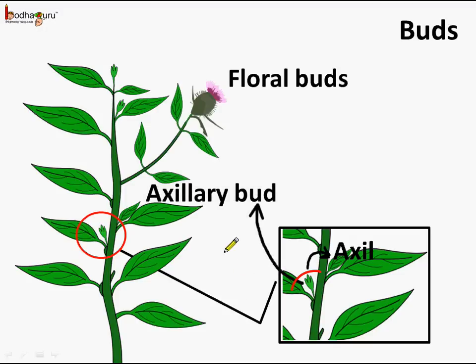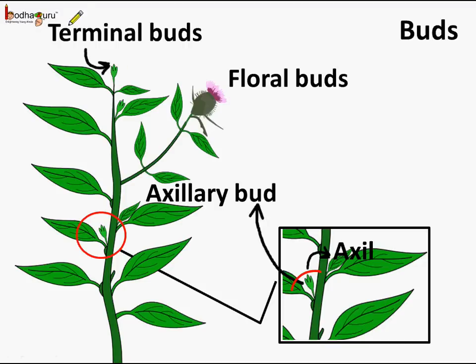The axillary bud may change into a stem or into a leaf. Here there is a bud which grows on the topmost part of the stem and it is called terminal bud. Terminal bud increases the height of the plant, or specifically the stem.